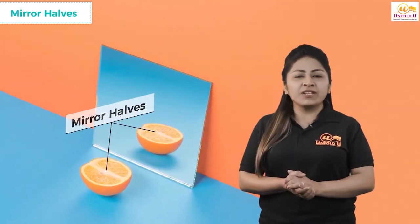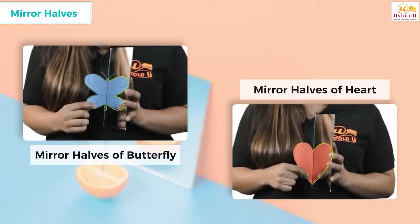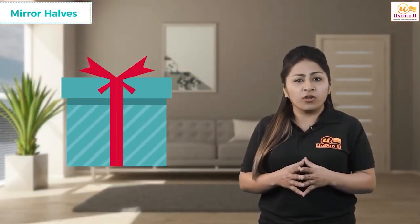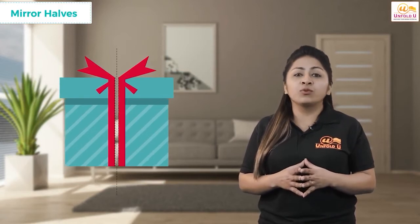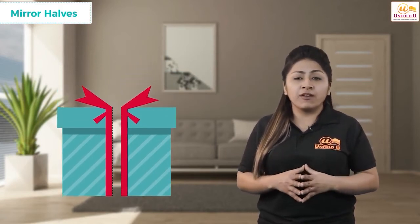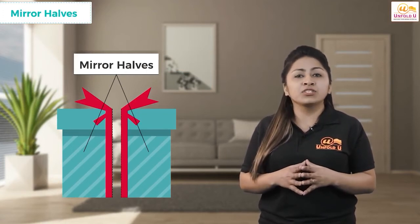Let us now understand the mirror halves. You see that in the mirror games we just played, the object and its image are mirror halves of each other. If for an object or a shape, a line divides it into two identical halves, the two halves are called the mirror halves because they are mirror images of each other. Also in this heart, the parts of the heart on either side of the line are identical and hence are called the mirror halves of each other.